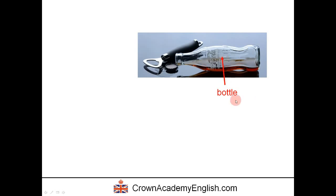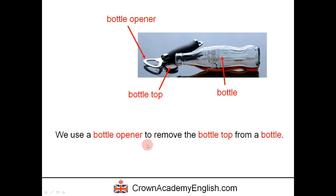This is a bottle. This is called a bottle top. And this object is called a bottle opener. We use a bottle opener to remove the bottle top from a bottle — or simply to open the bottle. We often use this with bottles of soda, Coca-Cola, and often with beer as well.